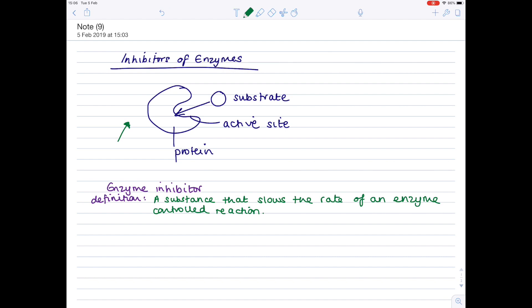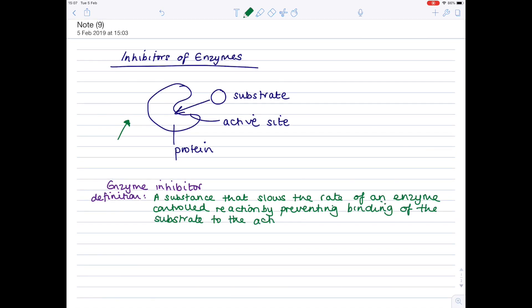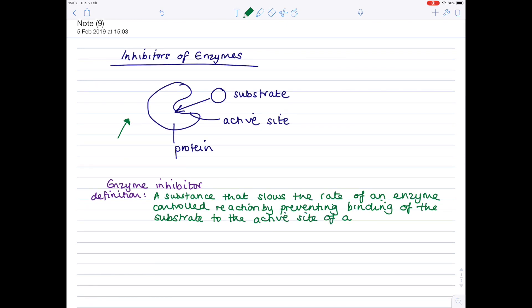So to finish off our definition, an enzyme inhibitor is a substance that slows the rate of an enzyme-controlled reaction by preventing binding of the substrate to the active site of an enzyme. And that is a nice, complete definition.